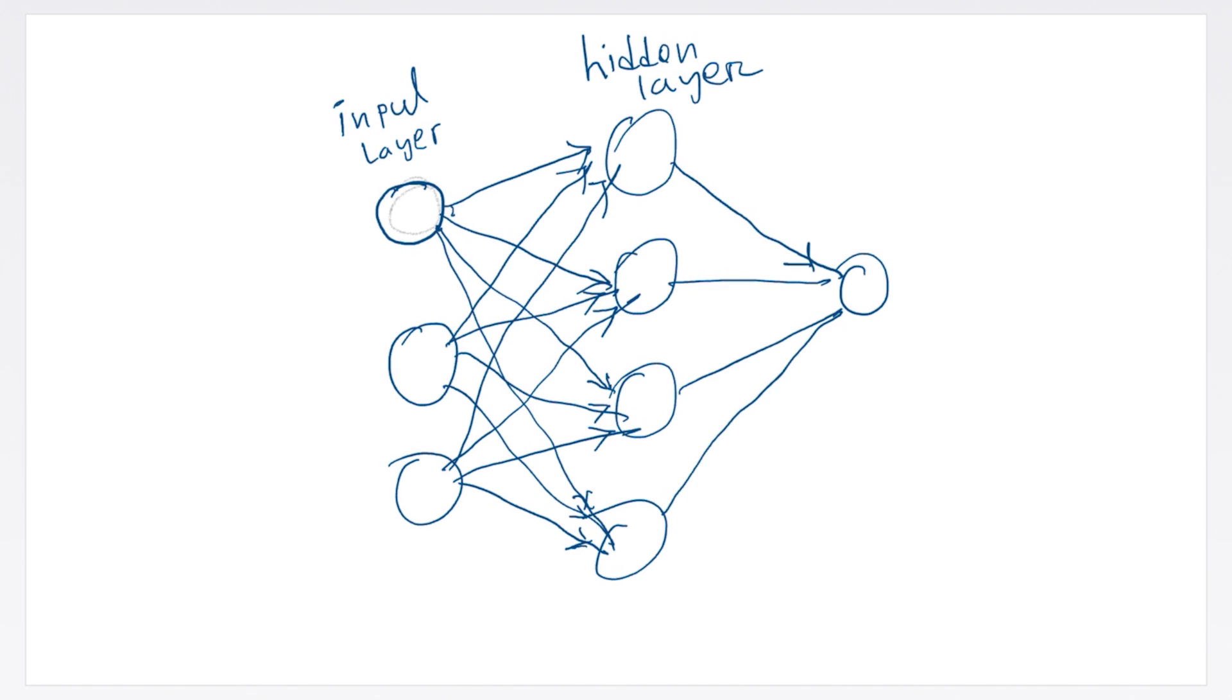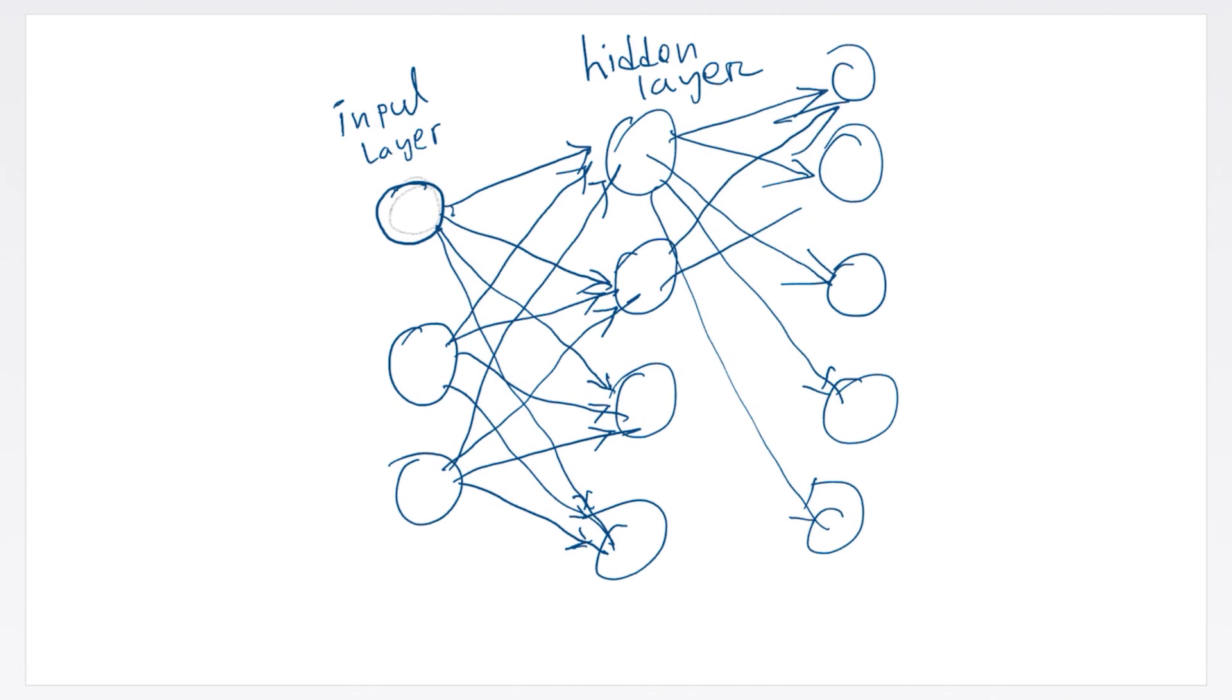In a regular neural network, the input passes through the input layer to a hidden layer and then to the output layer. Of course, there can be many hidden layers.